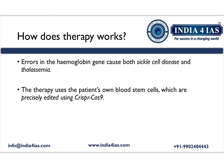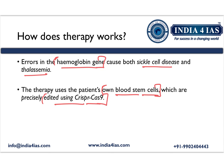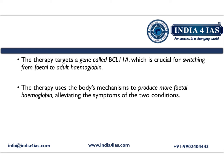Moving on to the working mechanism of CasGavi therapy. As we know, errors in the hemoglobin gene cause both sickle cell disease and thalassemia. In CasGavi therapy, the patient's own blood stem cells are taken and edited using CRISPR-Cas9 technology in the lab. The therapy targets the gene called BCL11A, which is crucial in transitioning from fetal to adult hemoglobin. By stimulating the production of fetal hemoglobin, CasGavi therapy mitigates the symptoms associated with both sickle cell disease and thalassemia.